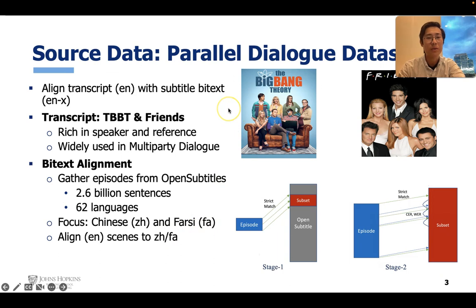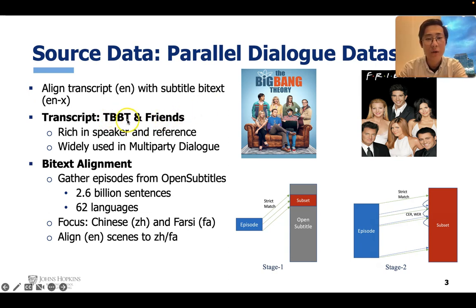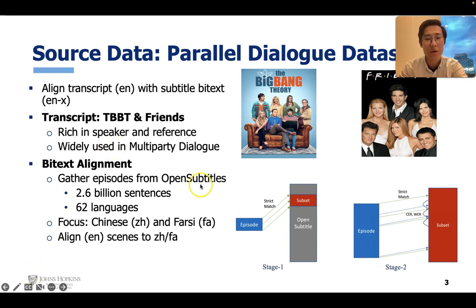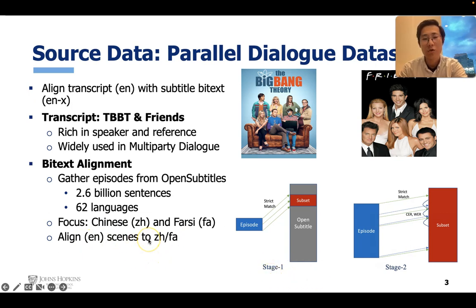We start with building the source data, which is a parallel dialogue dataset. We align transcripts in English with subtitles using bitext, which is an English and other language pair. We take the transcripts of The Big Bang Theory and Friends since they are rich in speaker references and have widely been used in multi-party dialogue research. Based on that, we perform bitext alignment. We gather episodes from the OpenSubtitles corpus, which is a giant corpus with 2.6 billion sentences across many languages. In this work, we only focus on Chinese and Farsi, but it can be extended to many more languages. We adopt two-stage alignment to align English text to Chinese and Farsi.